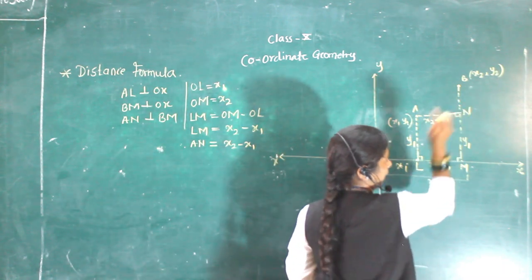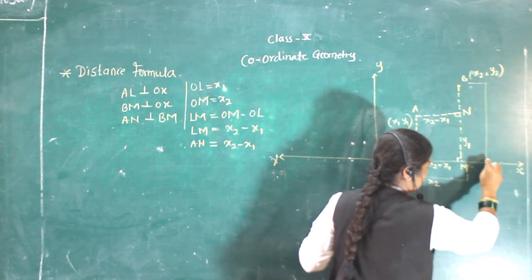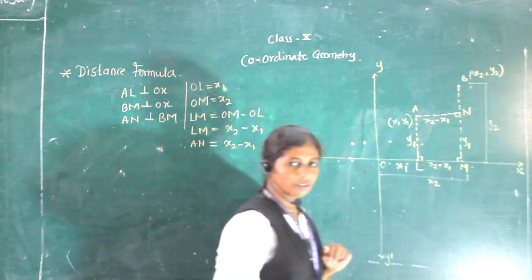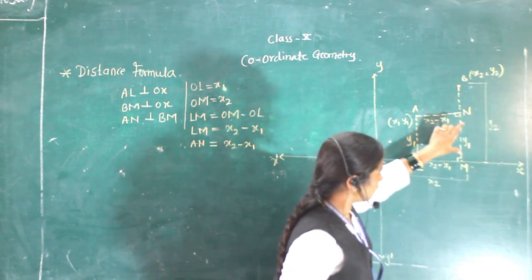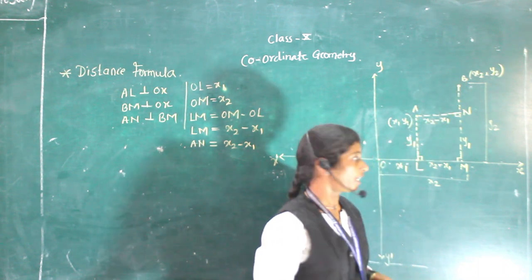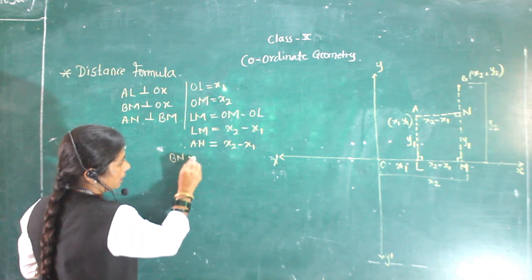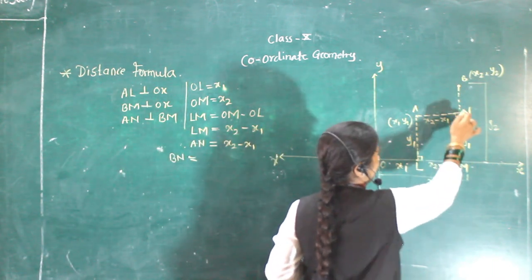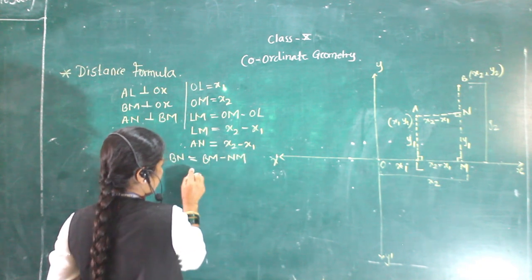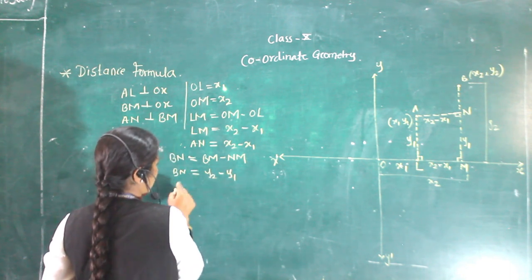Now we will find BN. The total distance BN — the total distance is y2. If you subtract y1 from y2, you get the BN distance. So BN equals y2 minus y1.